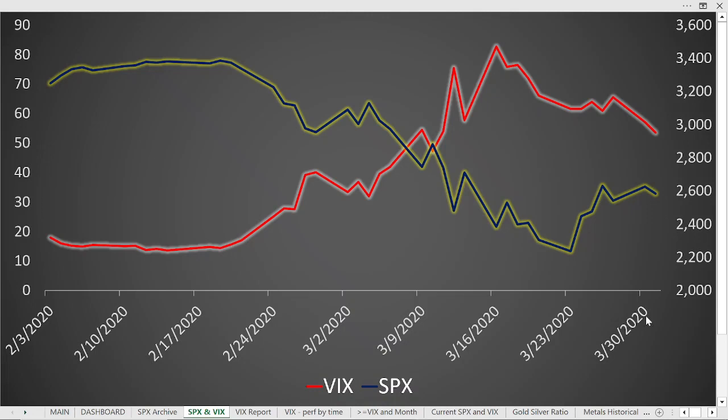Welcome back. Given our current market volatility, it might be helpful to take a look at the VIX, which is the volatility index comprised of near-term options on the S&P 500. Typically, when stocks go down — such as the S&P 500 shown here in blue — the VIX tends to go up. The VIX acts as insurance, so when the stock market goes down, traders tend to buy protective puts or sell covered calls.